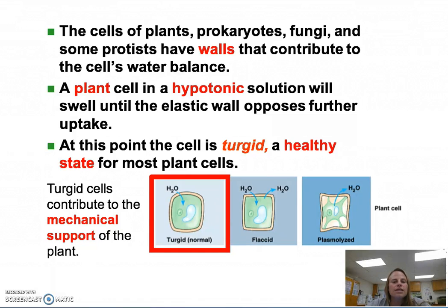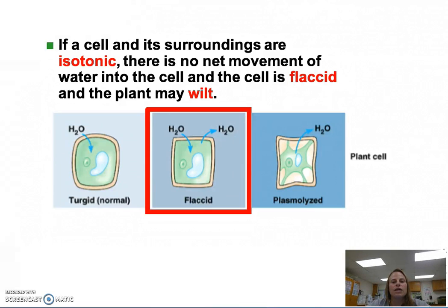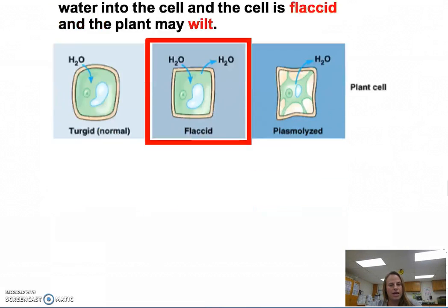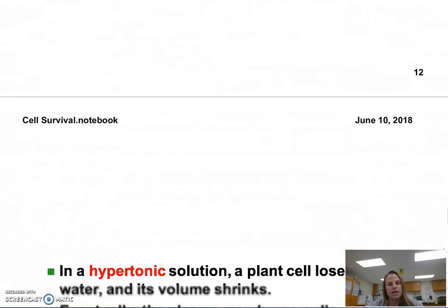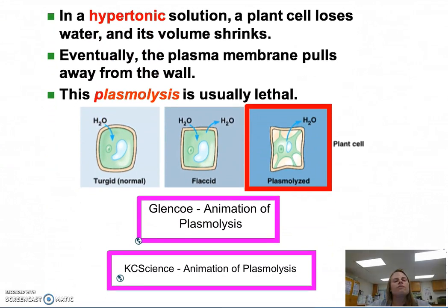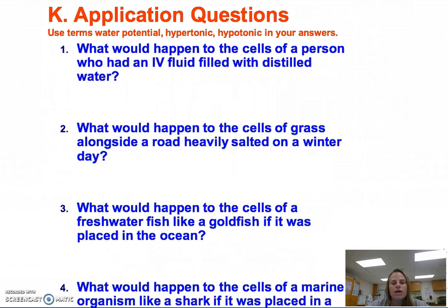Plants are a different story. Plants in a hypotonic solution are going to swell until the elastic wall meets up with the cell wall. At this point, the cell wall is able to maintain that pressure and the cell is known as turgid — it's in a healthy state. On the other hand, if a plant cell is exposed to something isotonic, it might become flaccid and wilt. Lastly, a plant cell might undergo plasmolysis if placed in a hypertonic solution, where the cell membrane will actually shrink because the plant cell is losing water.